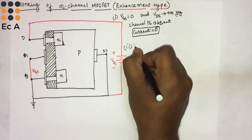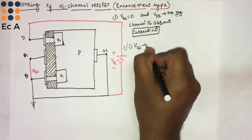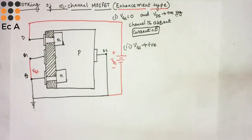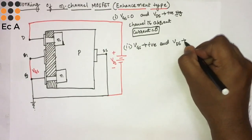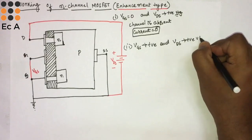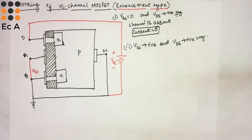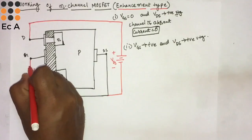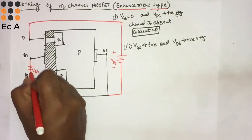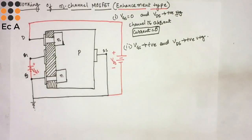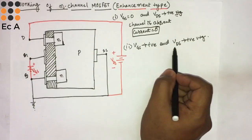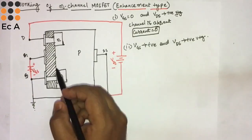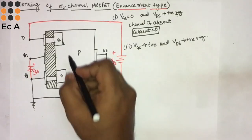For the second case, we make VGS as some positive voltage and VDS again as a positive voltage. The gate terminal is made positive and the drain terminal is also made positive.